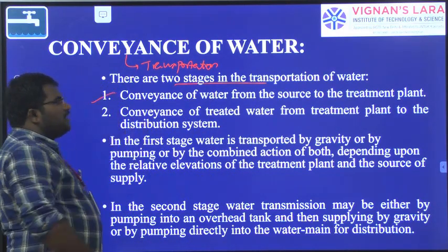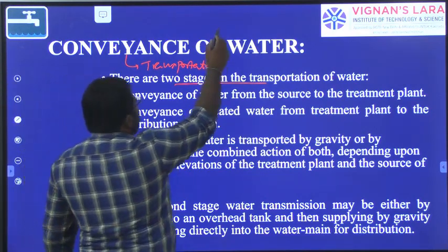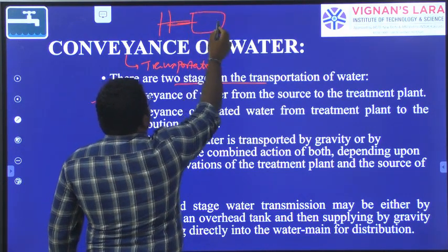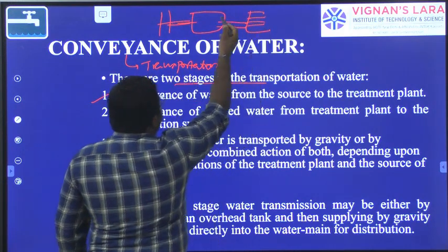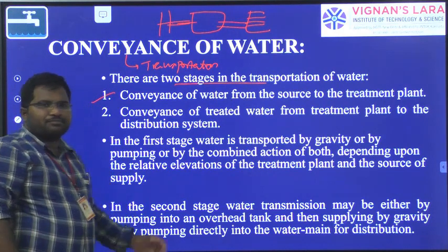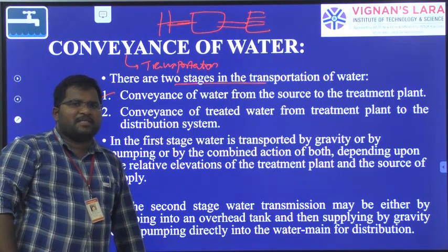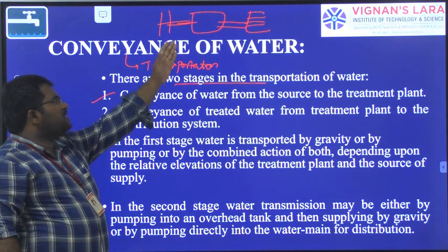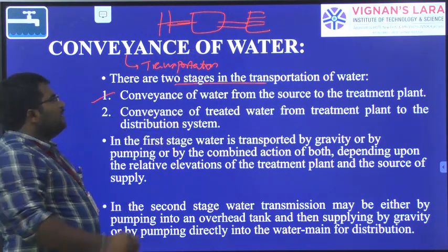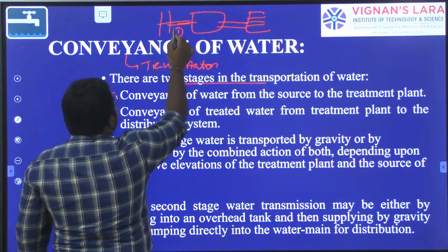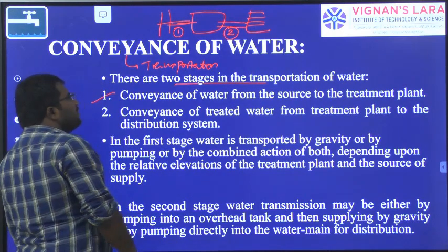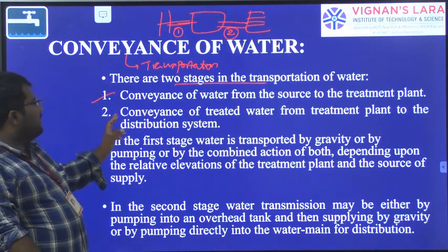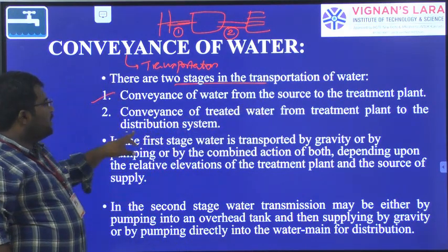The first stage is conveyance of water from source to the treatment plant. From the source, we convey water to the treatment plant, and from the treatment plant we go for distribution. In the first unit, we saw that there are four components of a water supply scheme: collection system, conveyance or transmission system, treatment or purification system, and distribution system.